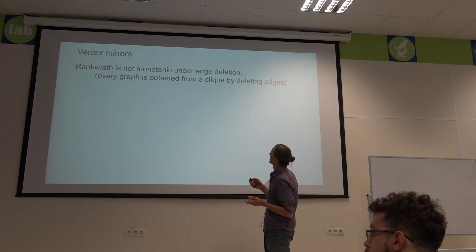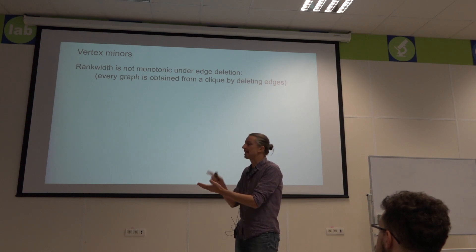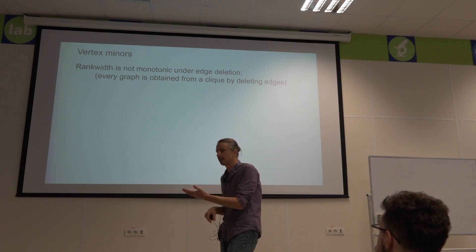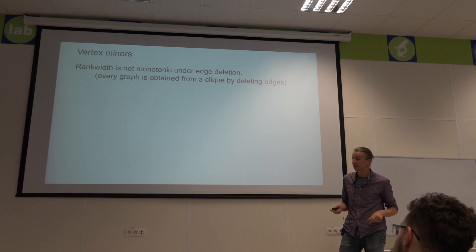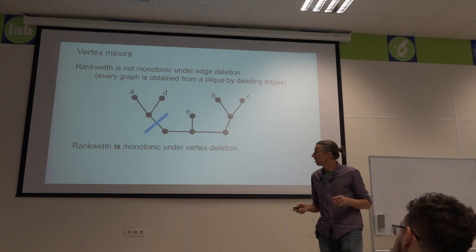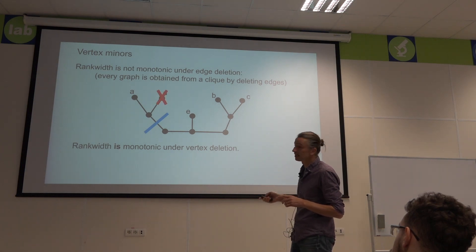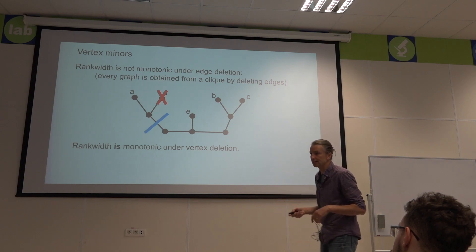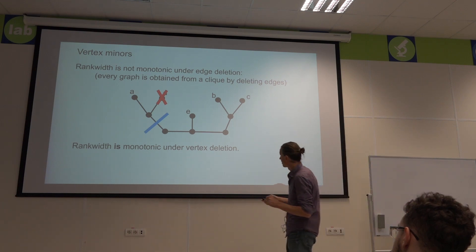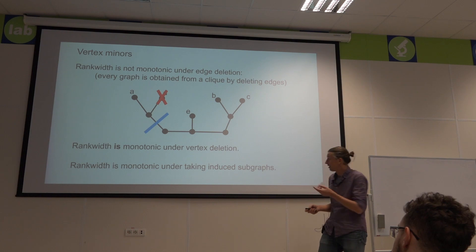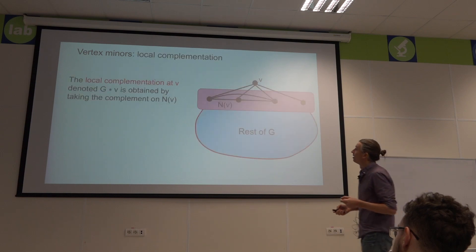Rank width is not monotonic under edge deletion — consider the clique, which had rank width one, but graphs obtained by deleting edges from it can have larger rank width. However, rank width is monotonic under vertex deletion: if I look at my rank decomposition and delete vertex D, I just delete that leaf from the decomposition and still have a valid decomposition of the graph. Therefore rank width is monotonic under taking induced subgraphs.